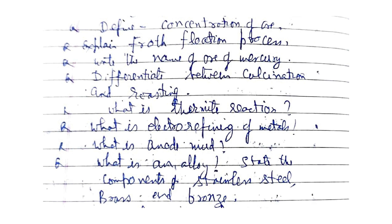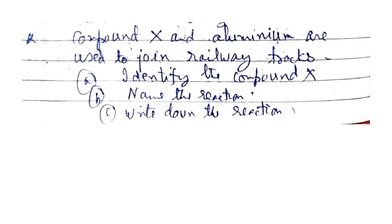What is electro-refining of metals? What is anode mud? What is an alloy? State the components of stainless steel, brass, and bronze. The compound X and aluminium are used to join railway tracks — identify compound X, name the reaction, and write down the reaction.